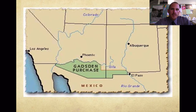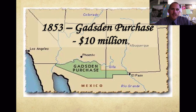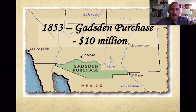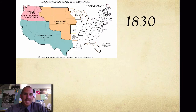A few years later, the Gadsden Purchase added a strip of land in what is now southern Arizona and a bit of New Mexico — not included in the original Treaty of Guadalupe Hidalgo. We paid Mexico $10 million for just this small area, which was actually a good deal for Mexico considering they had given up so much more for only $15 million — this was two-thirds of that amount.